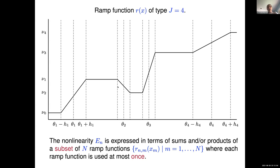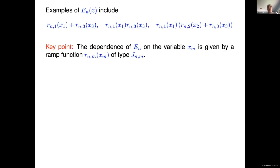If you think about all functions that can be approximated by ramp functions, with smooth functions you can approximate pretty much any smooth function using these ramp functions. The nonlinearities we work with are expressed in terms of sums or products of ramp functions, with the key restriction that I'm only allowed to use a ramp function of a particular variable once. So R_{n,m} means a ramp function dependent on the m-th variable used to define the E_n term. Examples of E_n's: I could take a ramp function defined in terms of the first and third variables and add them together, or multiply them — sums and products are fine.